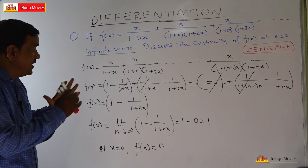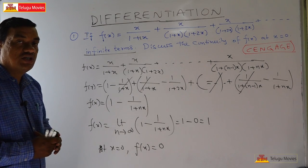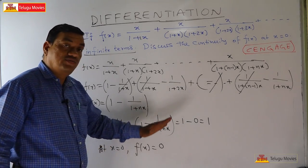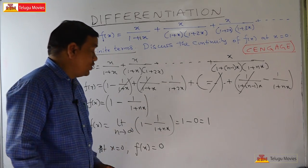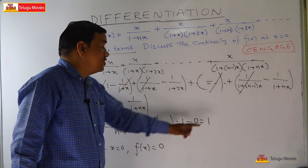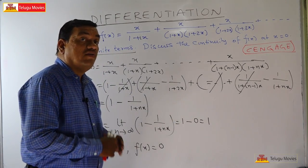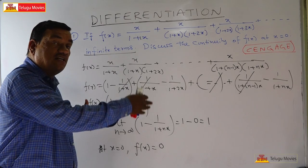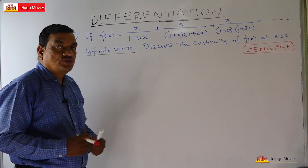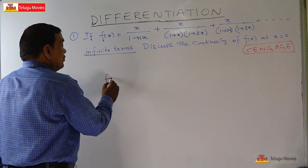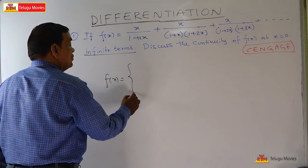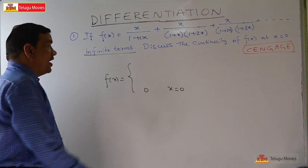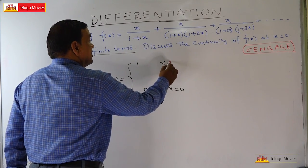From this piecewise form, we can see clearly that f(x) = 0 when x=0, and f(x) = 1 for all x ≠ 0. Drawing the graph: when x ≠ 0, the function value is 1 (a horizontal line at y=1), while at x=0 the function value is 0.